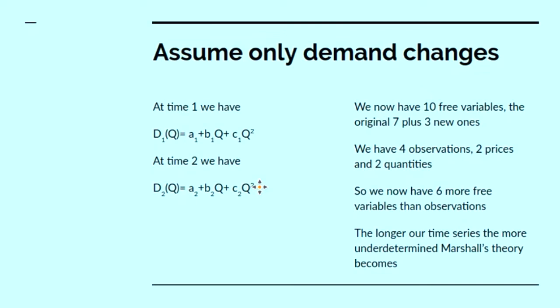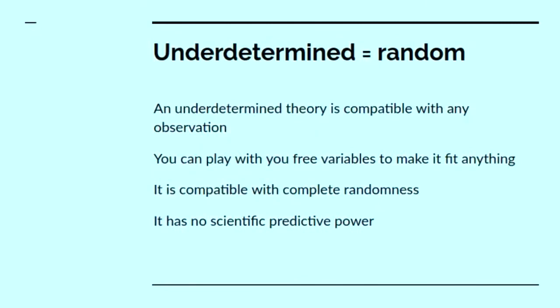Now, mathematically you say a set of equations are under-determined when there aren't enough equations to constrain the free variables. And another way of saying that is that if you've got an under-determined theory, it's essentially random. An under-determined theory is compatible with any observation. You can play around with the free variables to make it fit anything, and has no scientific predictive power. This is the point that Leibniz makes, that you can put down any random series of dots and fit a function through it, but unless your function contains a lot less free variables than observations, it can't be treated as a law.